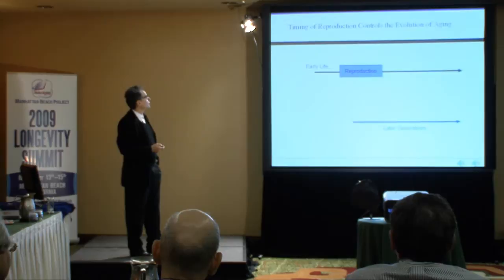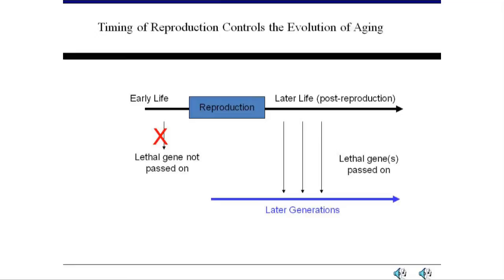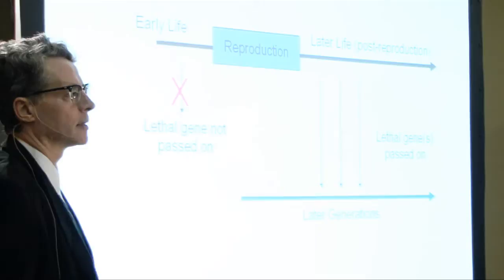Basically what this means is the timing of reproduction controls the evolution of aging. If a gene is going to kill you with certainty and it kills you before reproduction, natural selection will completely clean it out. After the last stage of reproduction, if a gene will kill you with complete certainty, natural selection doesn't care, and things get ugly. And in between you have that smooth transition — which we are all experiencing as aging, because I don't think there's anyone here over 95.